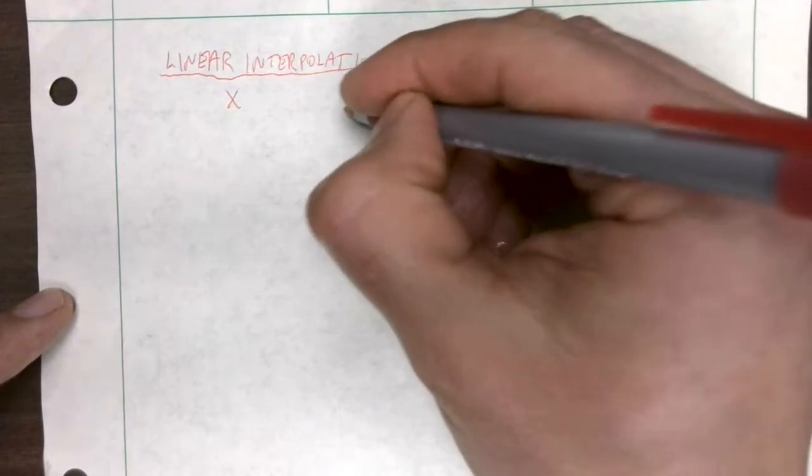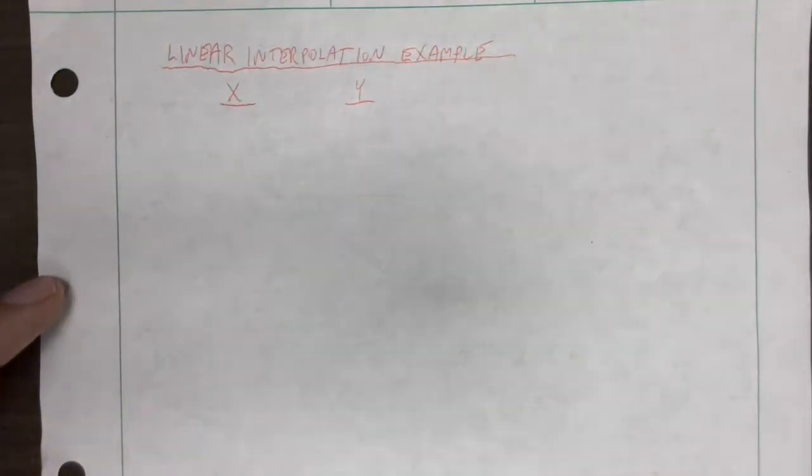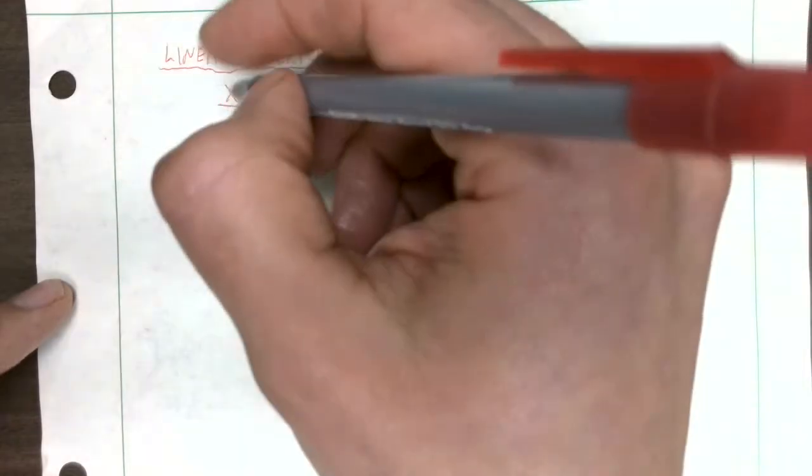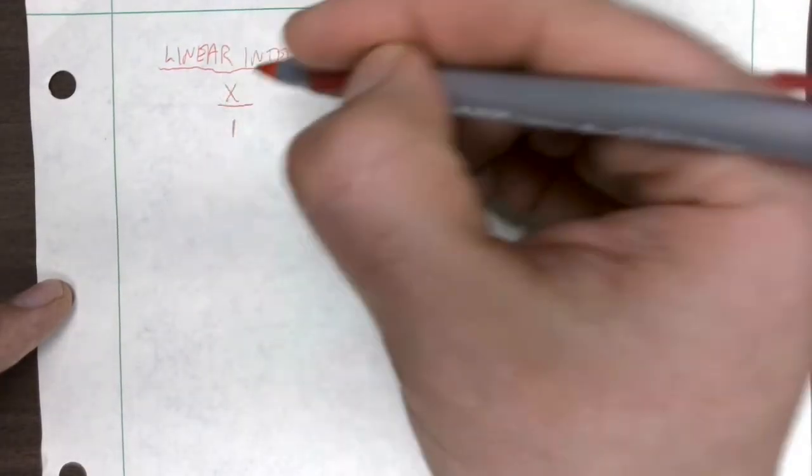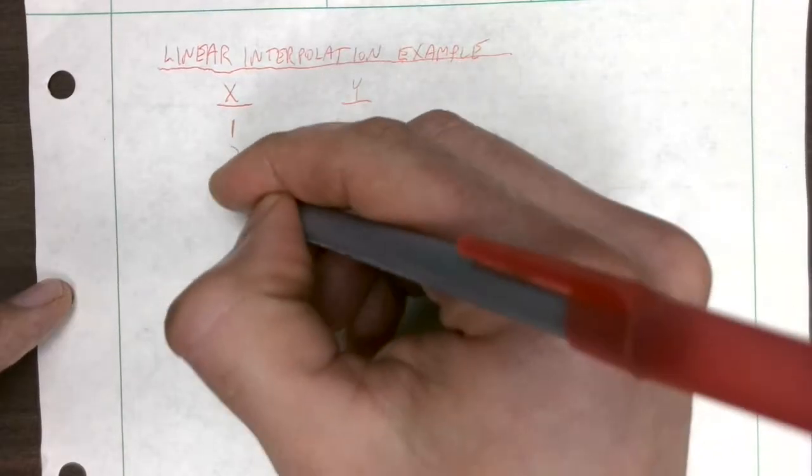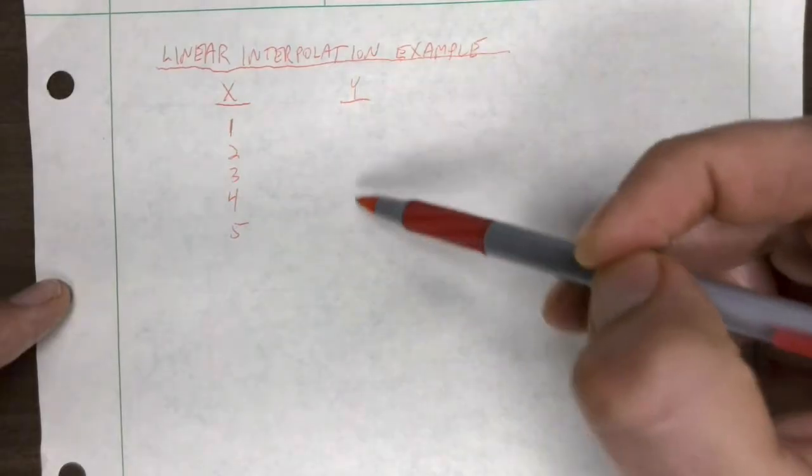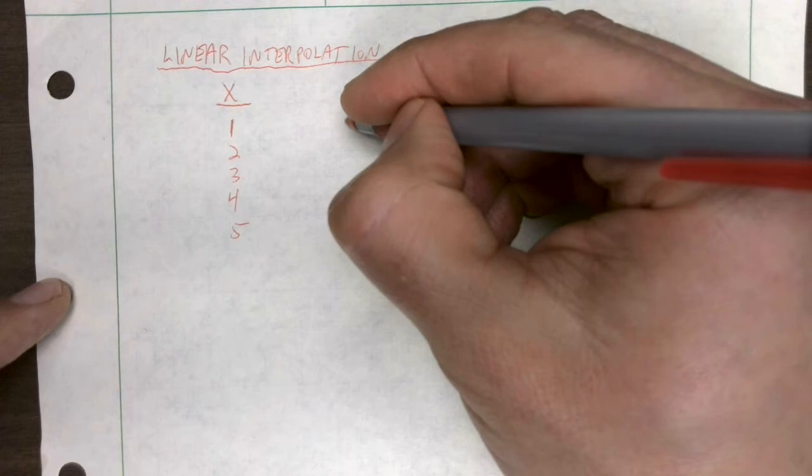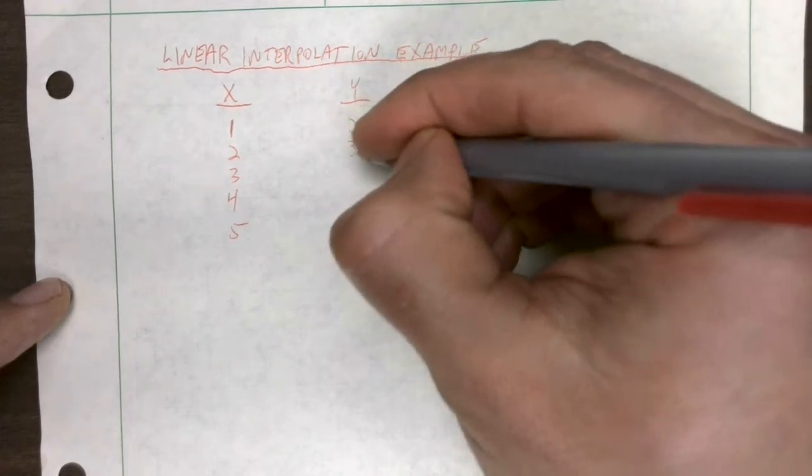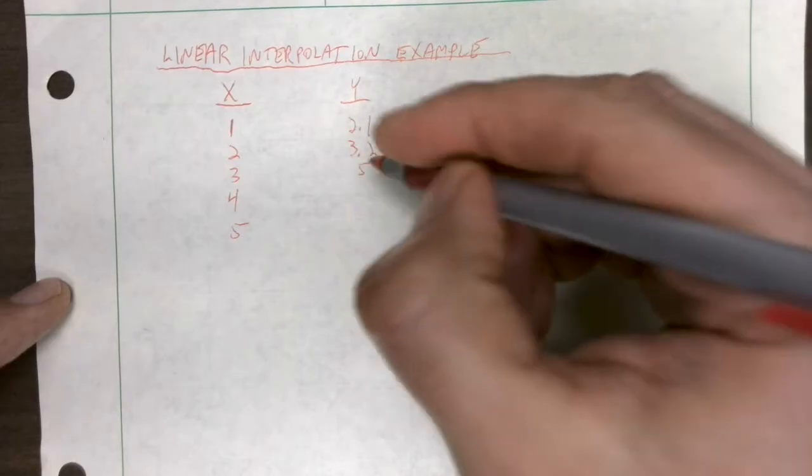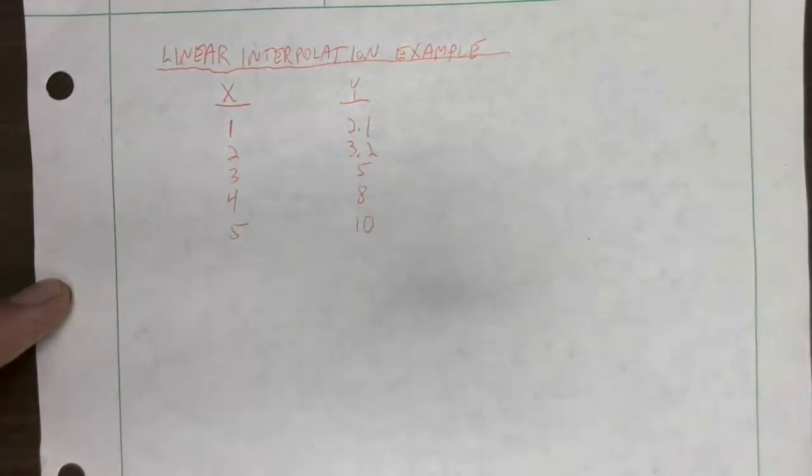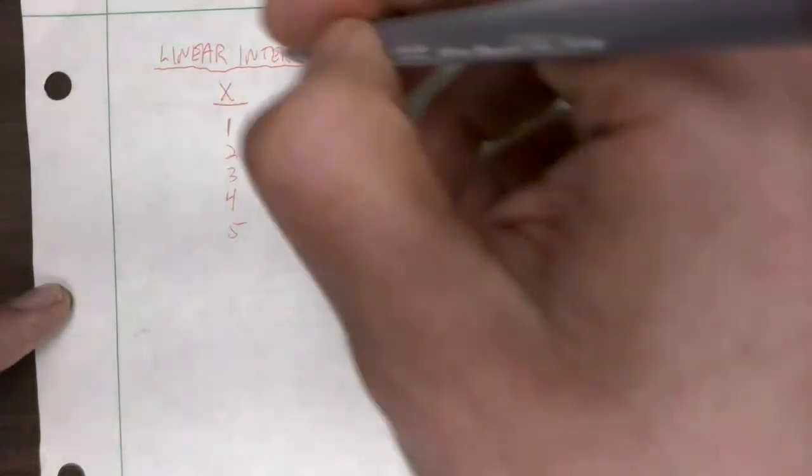To do an example we're going to need a situation where we have a bunch of x, y values in a table and then we want to find a value that's in between. Here for an example we could have x values of 1, 2, 3, 4, and 5. And then we have the corresponding y values: 2.1, 3.2, 5, 8, and 10.